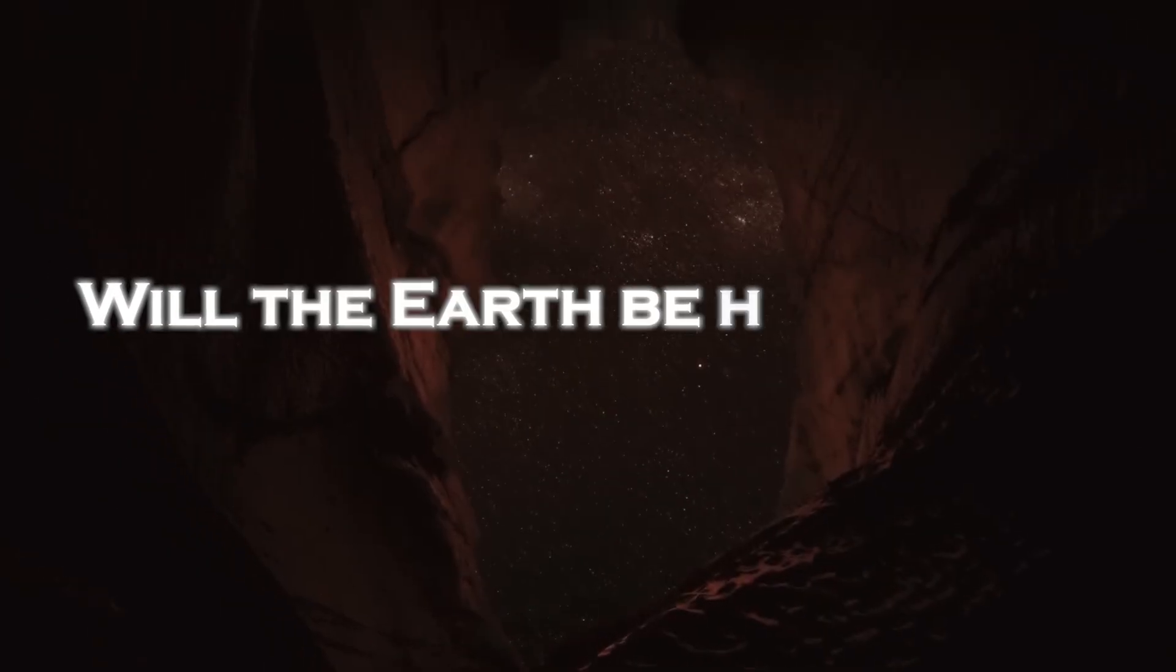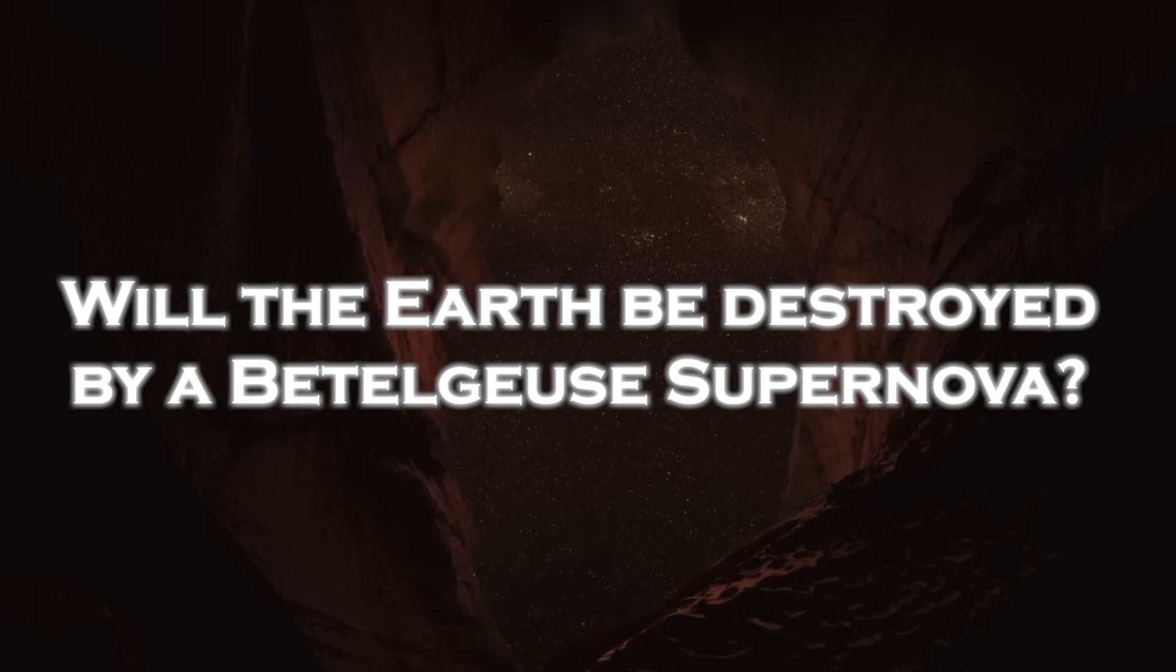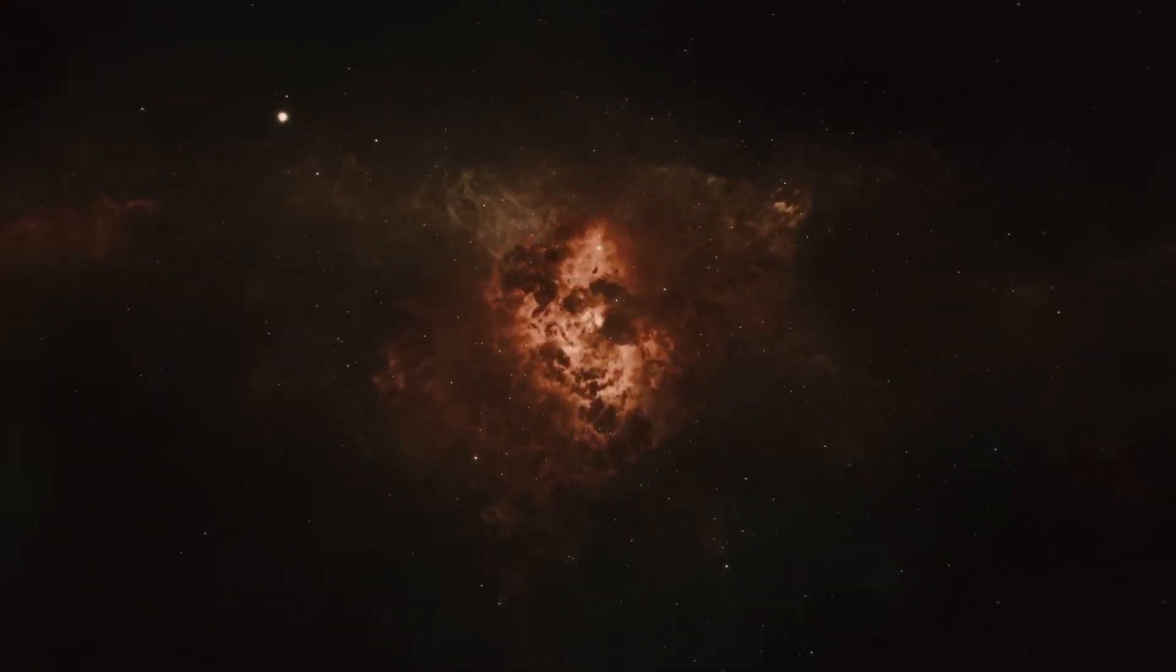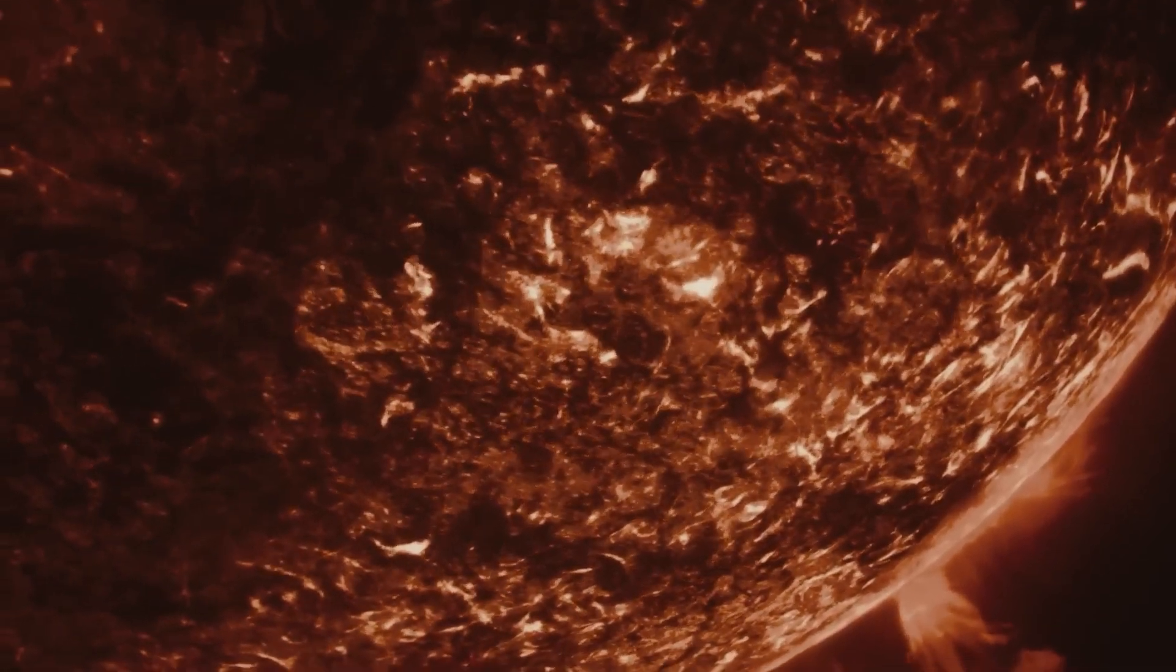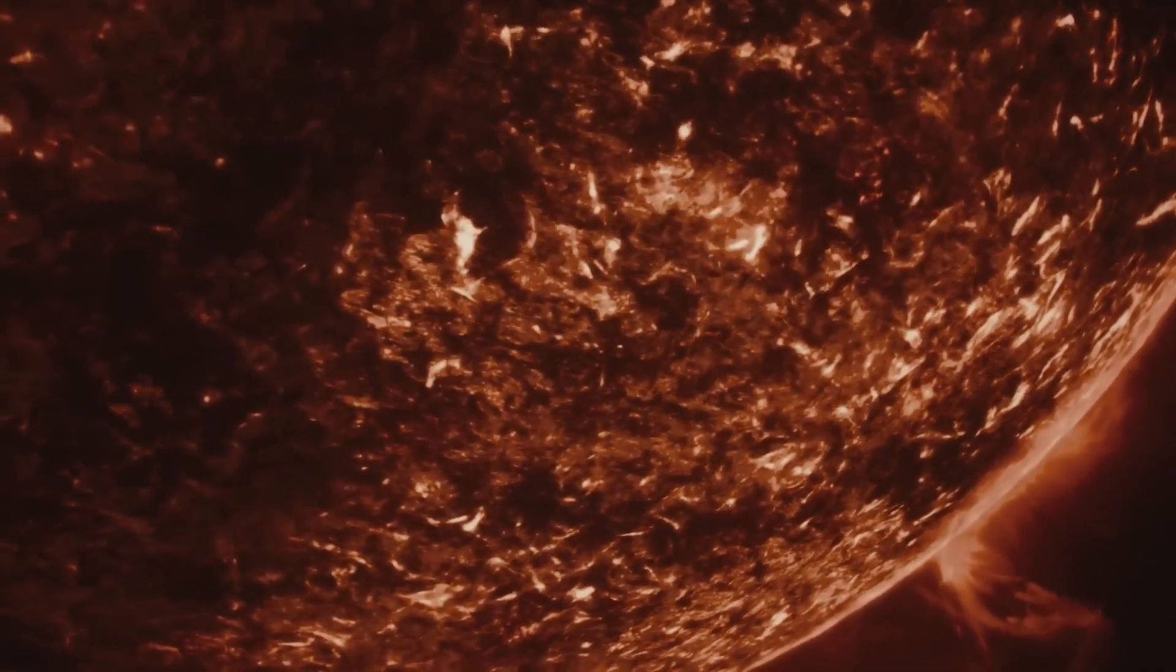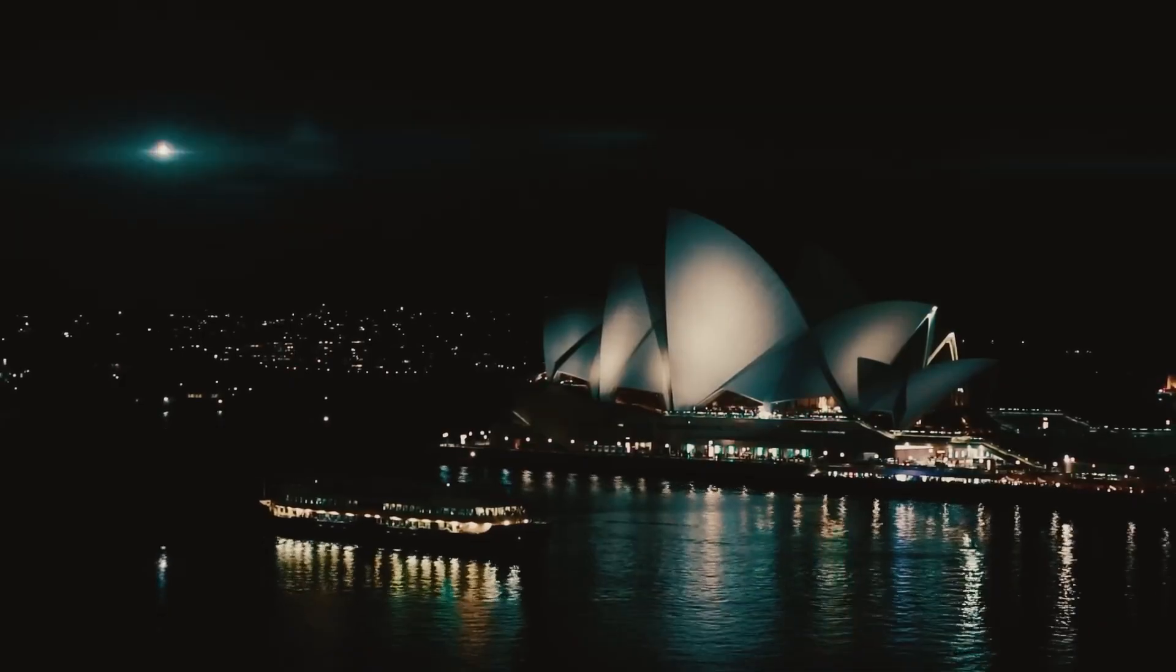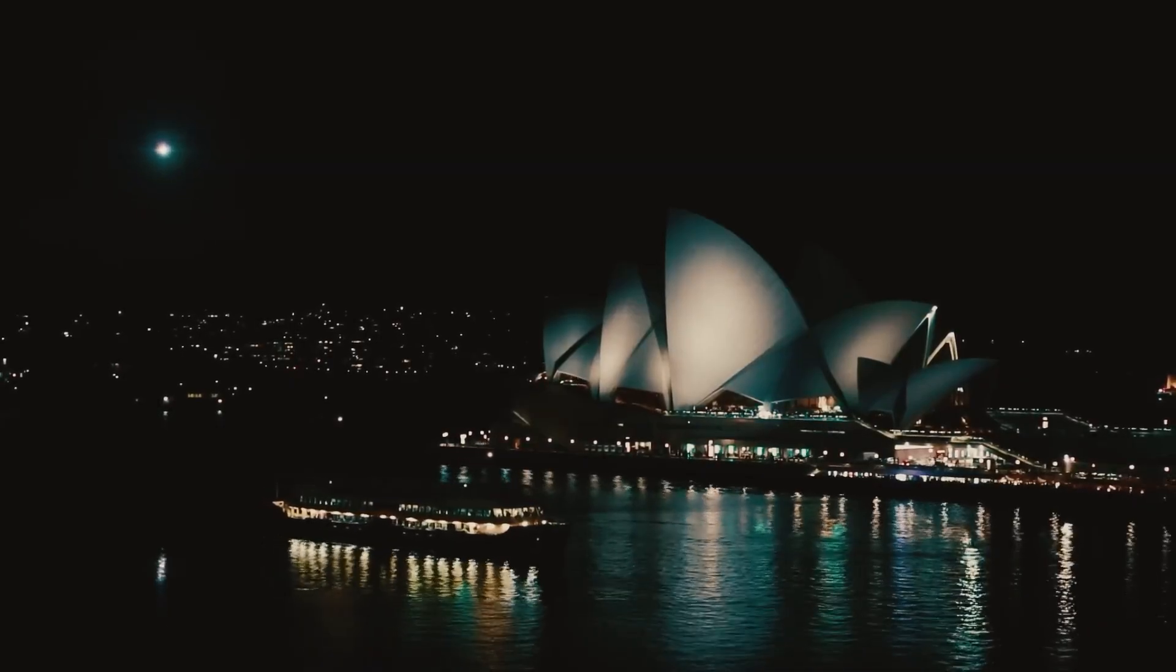Will the Earth be destroyed by a Betelgeuse supernova? The star will be the second brightest object in our sky after the sun when the supernova occurs, despite being far from us. Betelgeuse, which shines brighter than a full moon, will be visible during the day. It will be so dazzling for a few weeks at the peak of the explosion that shadows will even be cast in pitch darkness.